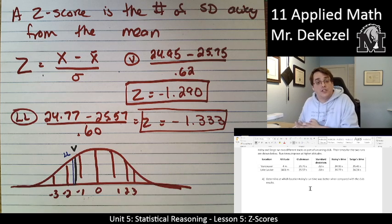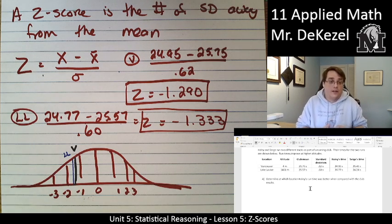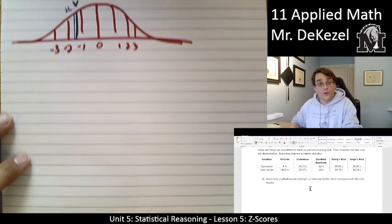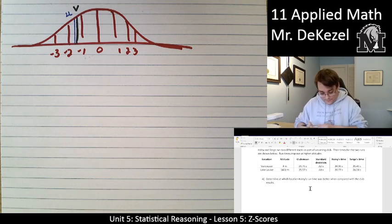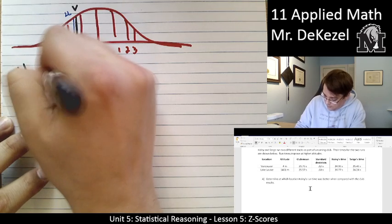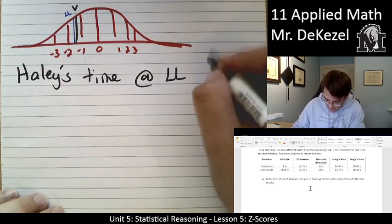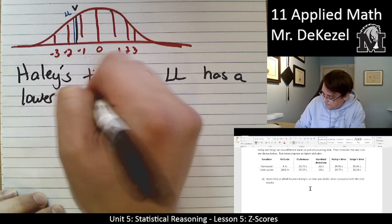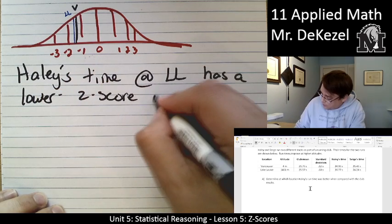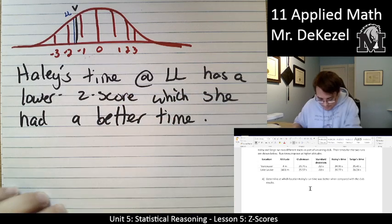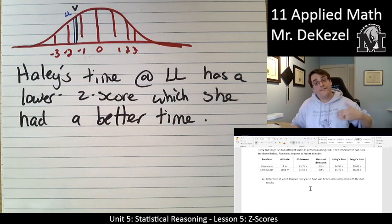Haley's time at Lake Louise has a lower z-score, which means she ran faster compared to what you would expect relative to the group. That's what we're trying to get at with z-scores.